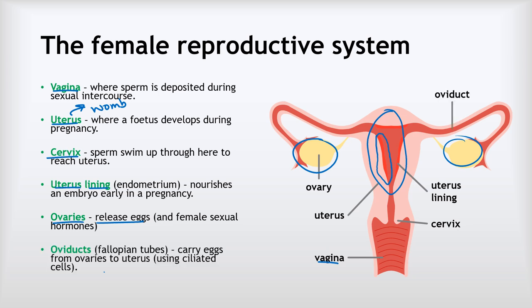Finally, we've got the oviducts, sometimes known as fallopian tubes. When an egg is released, it will be transported along the oviduct towards the uterus. Because the eggs can't swim, the oviducts are lined with ciliated epithelial cells — those little hairs that can waft the eggs along.